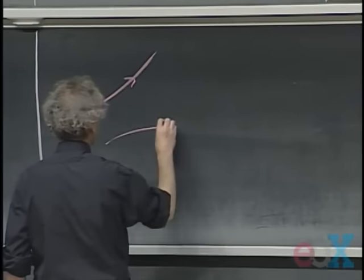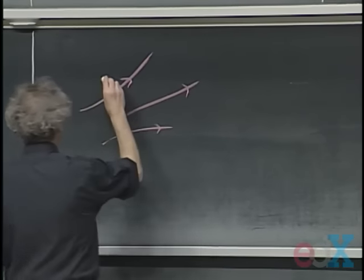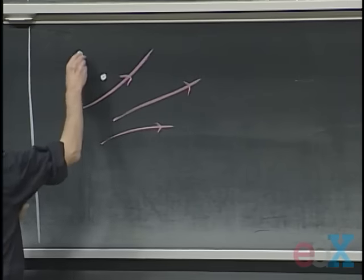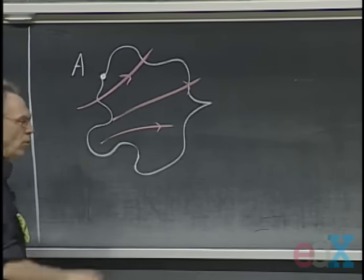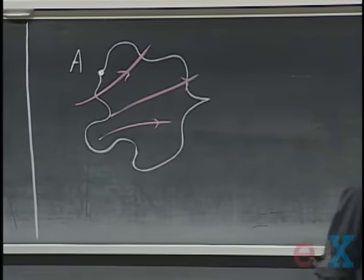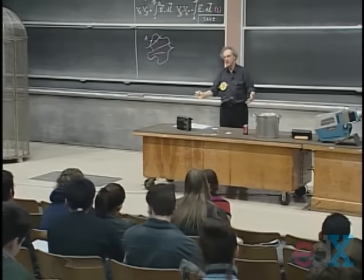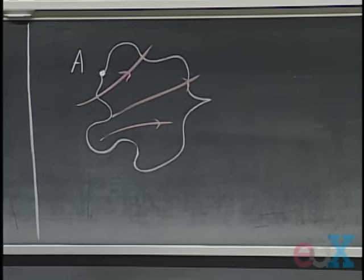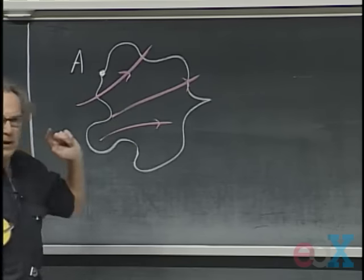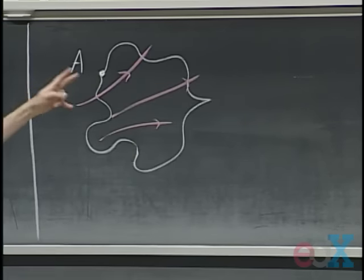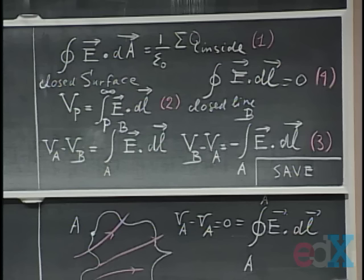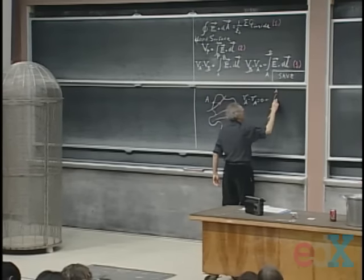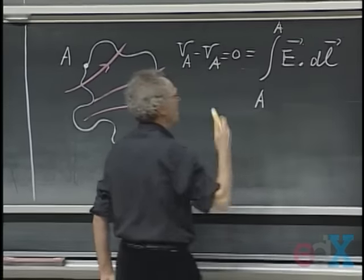Imagine I have an electric field here in space, and I take a charge Q in my pocket. I start at position A, walk around, and return to point A. Since these are conservative forces — if the electric field is a static electric field — the work I do when I march around and come back to point A must be zero.